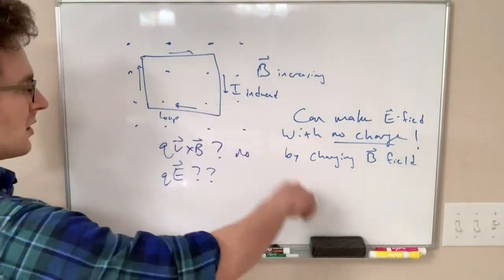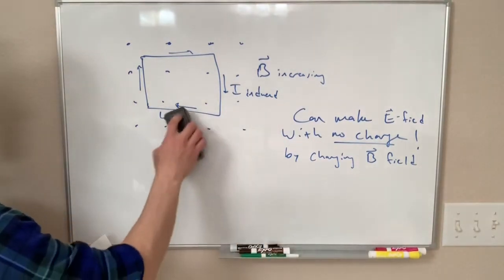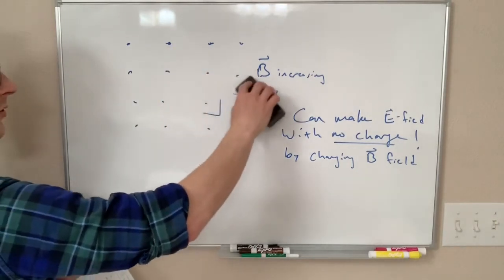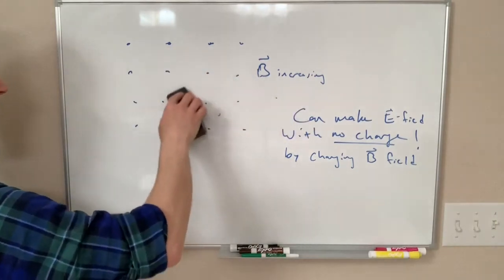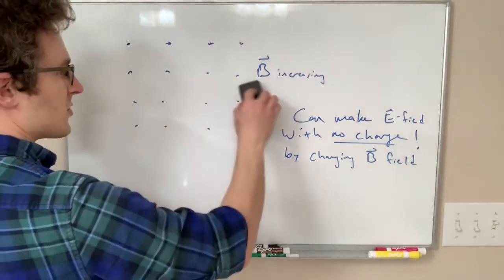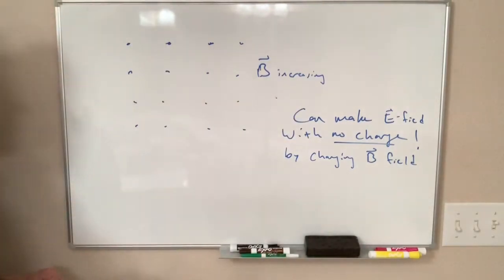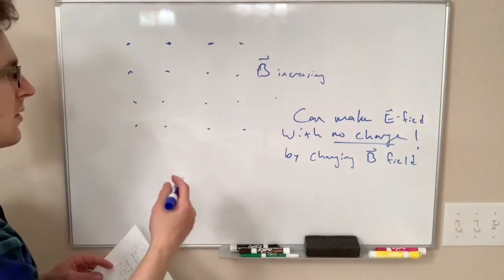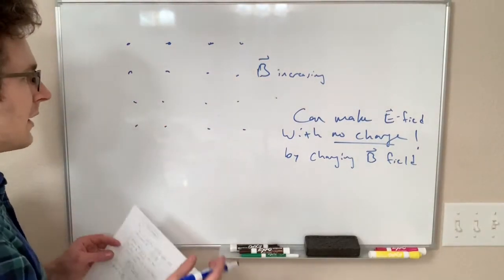but basically if we have a picture that looks like this, let me just erase our loop momentarily. So we have our magnetic field, and we are increasing the strength of this magnetic field. We end up creating an electric field that kind of wraps around this B field. And it, well,